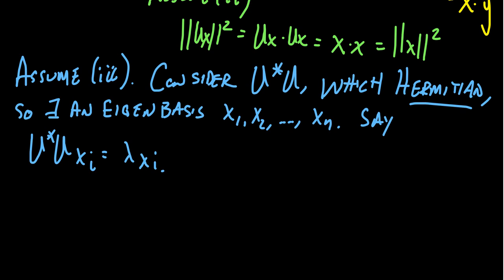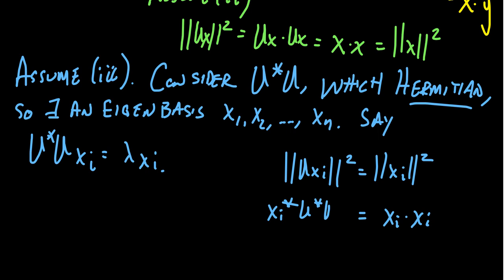So by assumption we know that the length of Uxi squared is equal to the length of xi squared, for which then the right hand side becomes xi dot xi. That's important. On the left hand side, we end up with xi star U star U xi.